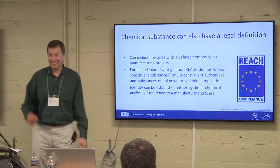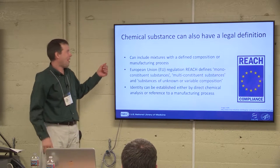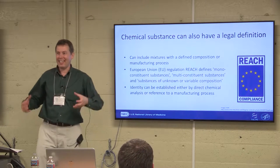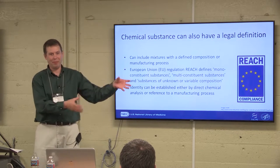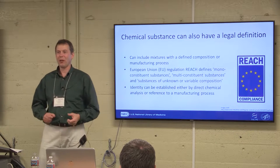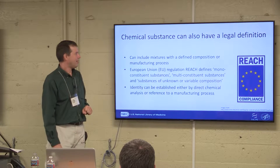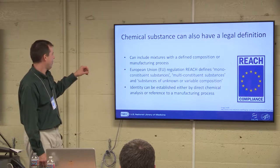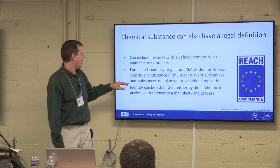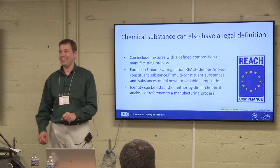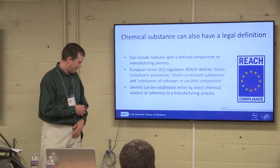You can also have a legal definition for what a chemical substance is. The EU has REACH — the registration, evaluation, authorisation and restriction of chemicals — and they define mono-constituent substances, multi-constituent substances, and substances of unknown or variable composition. You can establish some form of identity even for these complex mixtures.